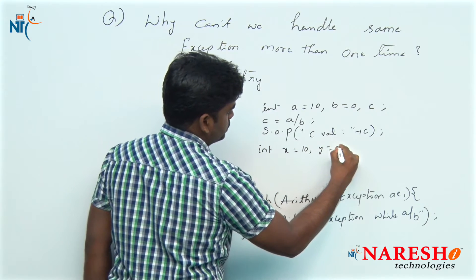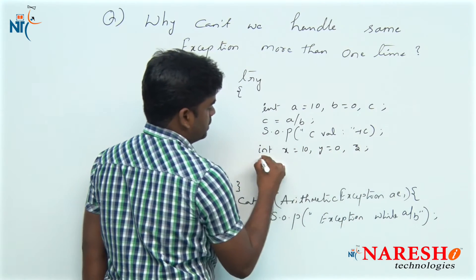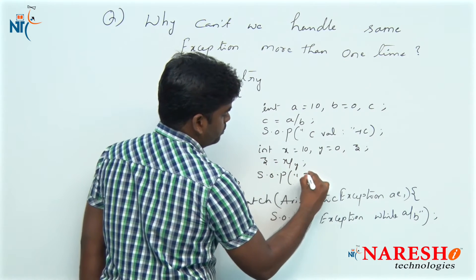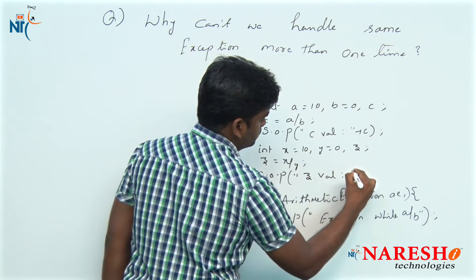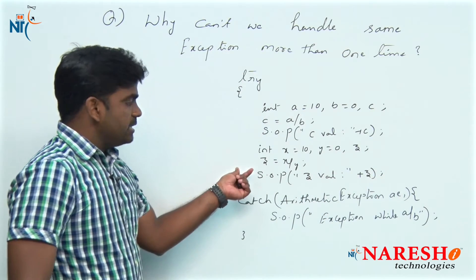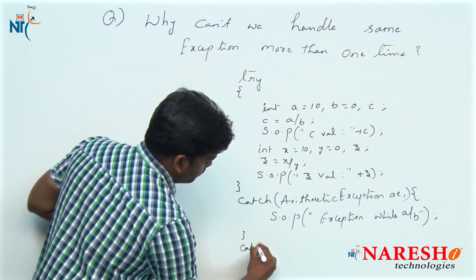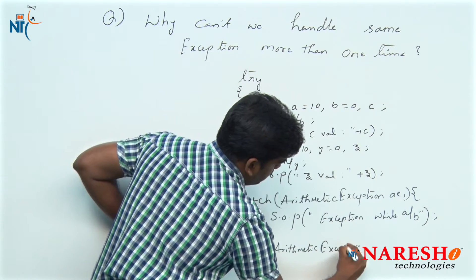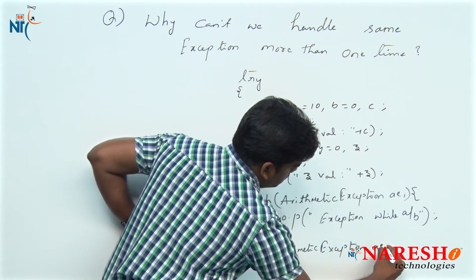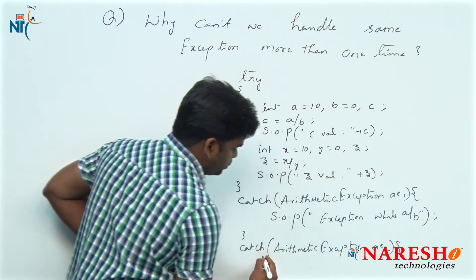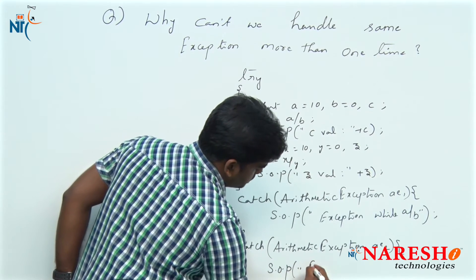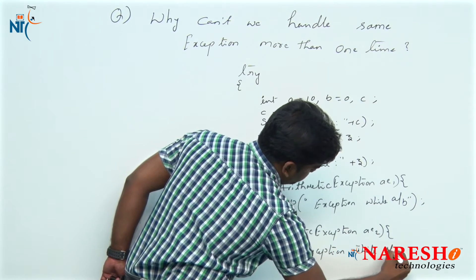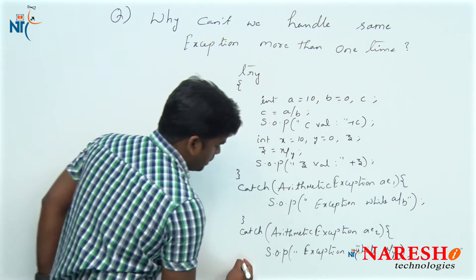Next, I want to perform one more operation: x = 10, y = 0, z = x / y. If there is no exception, we print z. If there is an exception in this line, we use one more catch block — same ArithmeticException (e2) — and print a message: exception while performing x / y.